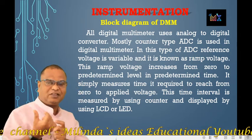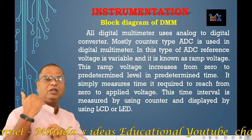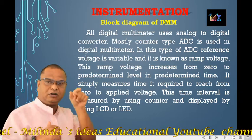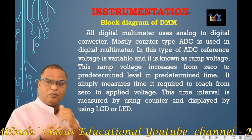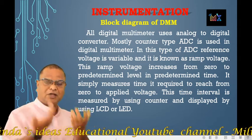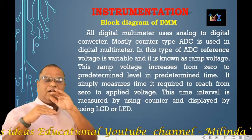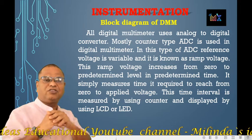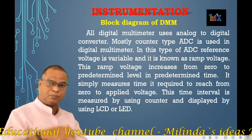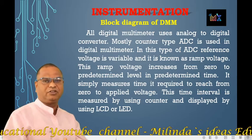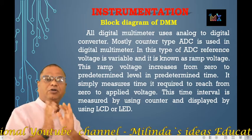If the input is AC voltage, the display shows the AC voltage value. If the input is current, the number displayed is the input current in the range of milliampere, ampere, or microampere, as per the input selection. When measuring resistance, the displayed number gives the resistance value of the component under test. So that is the block diagram of the digital multimeter.